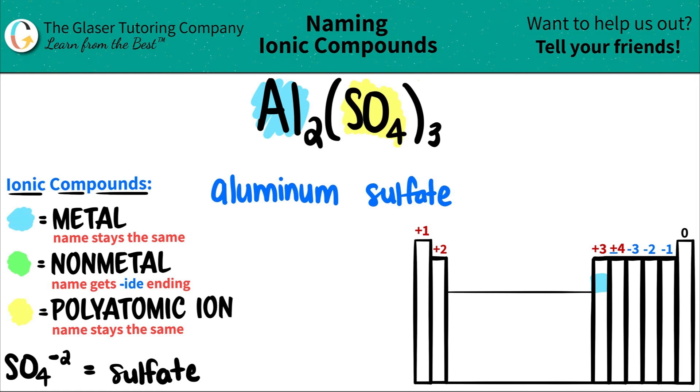But aluminum always has one charge. It's always going to be a plus three. So you don't have to say what the charge is because we always know that aluminum is a plus three. So aluminum is a metal that does not need a Roman numeral and you are done.